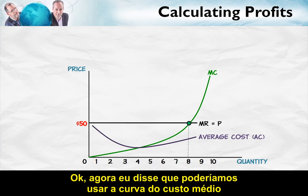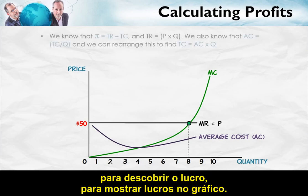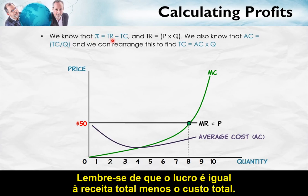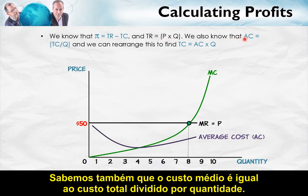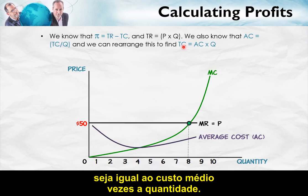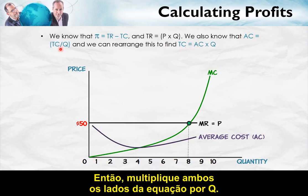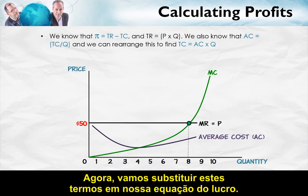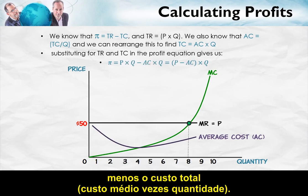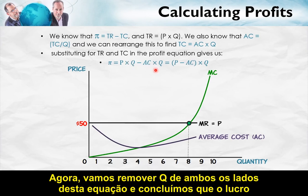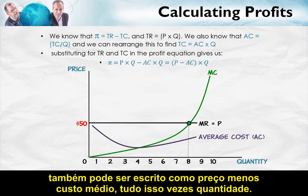Now, I said we could use the average cost curve to show profit on the diagram — we can do that with just a little rearranging. Remember that profit equals total revenue minus total cost, and total revenue is price times quantity. We also know that average cost equals total cost divided by quantity, so total cost equals average cost times quantity. Substituting into our profit equation: profit equals price times quantity minus average cost times quantity. Taking Q out of both parts, profit equals price minus average cost, all times quantity.